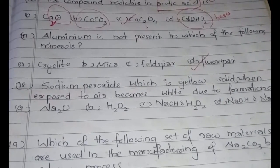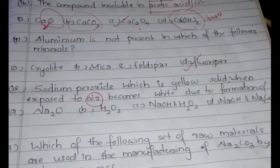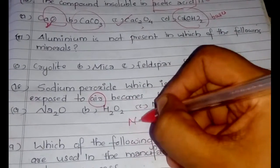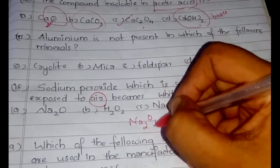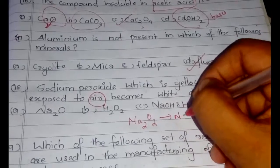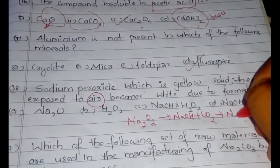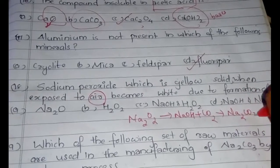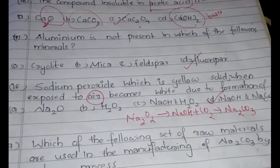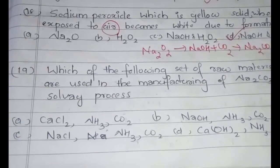The 18th question: sodium peroxide (Na₂O₂) is yellow, but when exposed to air it becomes white. In air there is oxygen, CO₂, and water. First, Na₂O₂ is converted to NaOH, and then when it reacts with CO₂ it forms Na₂CO₃. The answer is option D — both NaOH and Na₂CO₃, which are white.